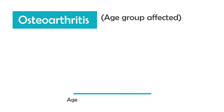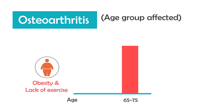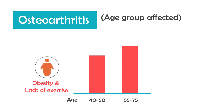Now, who are the patients who are usually affected? Our traditional teaching and observation was that it used to affect people more than 65 or 70 years of age. But with increasing obesity and lack of physical activity, in our clinical practice we are now seeing patients in their 40s — say 45 or 48 years of age — presenting with symptoms of osteoarthritis of the knee joint.